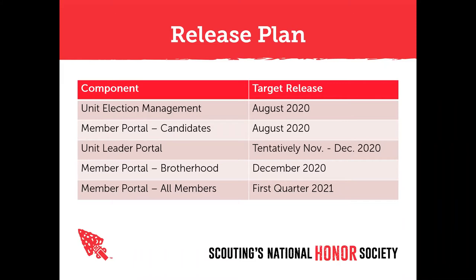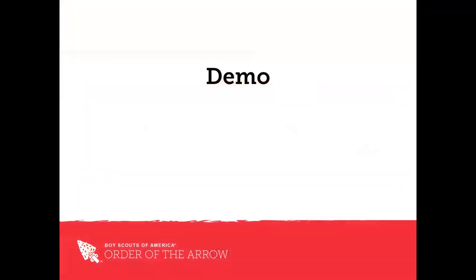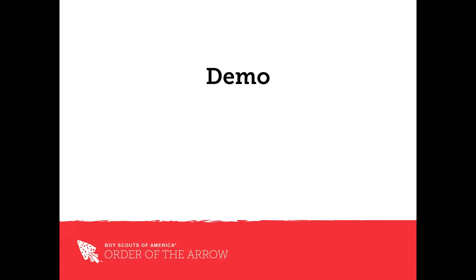Coming in November to December tentatively will be the Unit Leader Portal built into Scoutbook. Later in December toward the end of the year, the Brotherhood Member Portal will roll out. The first quarter of next year will bring the portal for all members. On the unit leader portal side, we're developing it in conjunction with the BSA's IT team, so some of it is dependent on their schedule — we're aiming for end of year but want to set clear expectations that it may be a little longer.